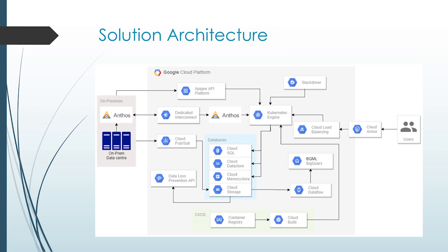Anthos is connected with Dedicated Interconnect, or we can use Partner Interconnect for partner connectivity. Data from on-premises will be streamed through Cloud Pub/Sub, which is a streaming service, and will be sent to Cloud Storage. From there we can use the Data Loss Prevention (DLP) API to identify confidential and personal information to make it even more secure.